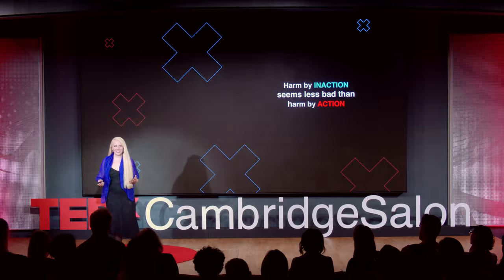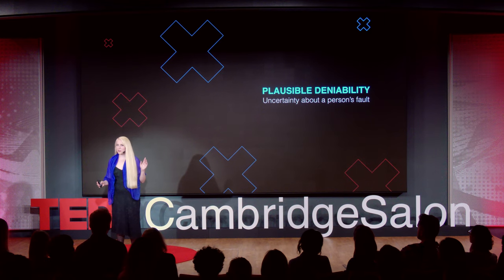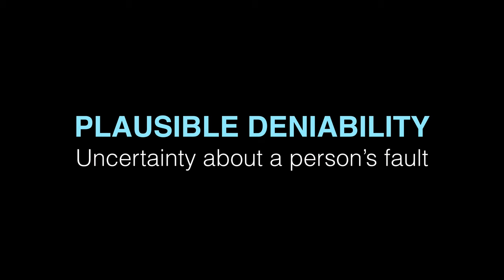We tend to think that morality is all about how bad someone's behavior is — how bad are the consequences, did someone intentionally cause harm? But our morality is full of puzzles. It is inconsistent and often wasteful. Why? One reason is that much of our morality is shaped by what other people are likely to think. A lot of our morality is shaped by what has plausible deniability in the eyes of others.